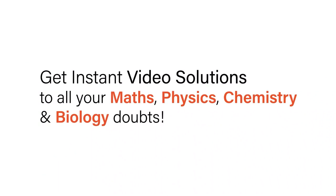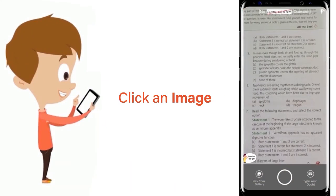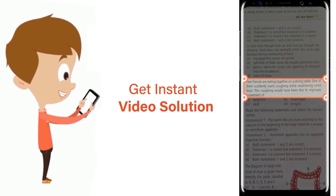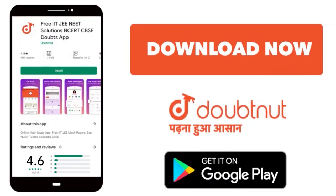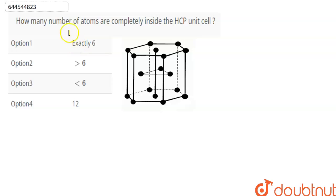With Doubtnet, get instant video solutions to all your maths, physics, chemistry and biology doubts. Just click the image of the question, crop the question and get instant video solution. Download Doubtnet app today. Hello everyone, here the question is: How many number of atoms are completely inside the HCP unit cell?